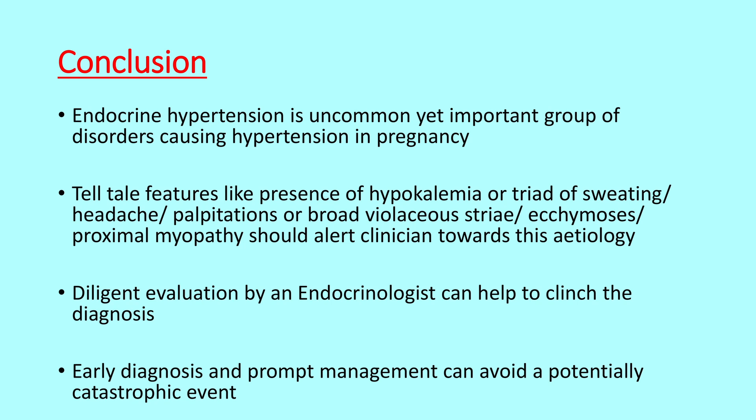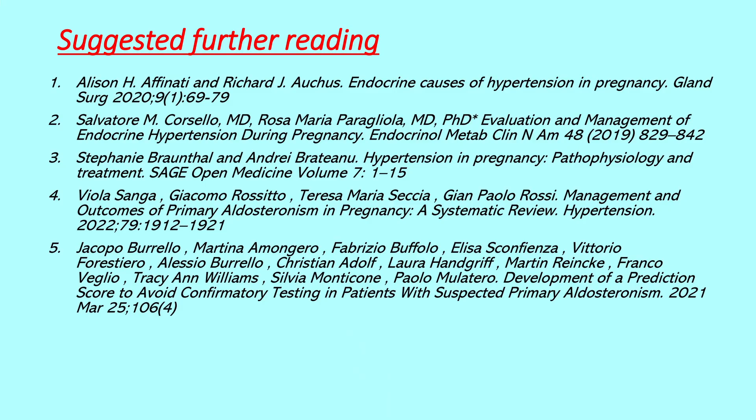To conclude: endocrine hypertension is an uncommon yet important group of disorders causing hypertension in pregnancy. Tell-tale features like hypokalemia, or the triad of sweating, headache, and palpitation, or broad violaceous striae with proximal myopathy alert the clinician towards the diagnosis of endocrine hypertension. Diligent evaluation is required, and early diagnosis and prompt management can avoid a potentially catastrophic event. Thank you.